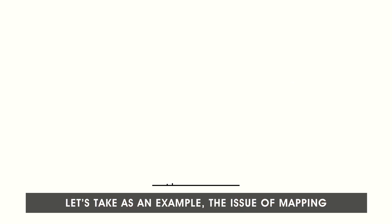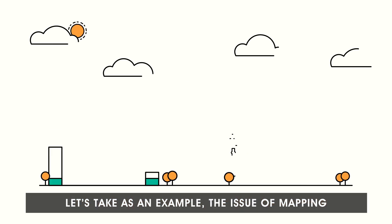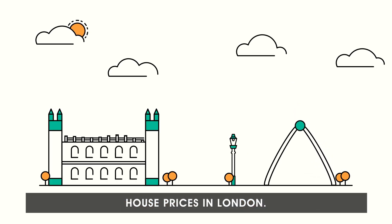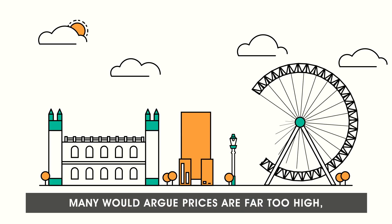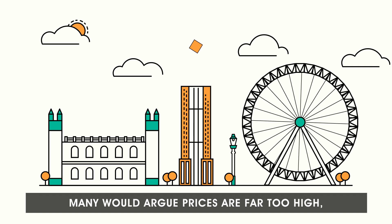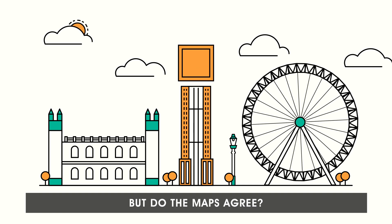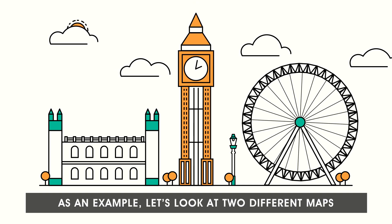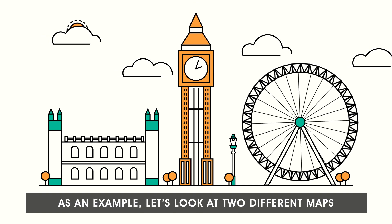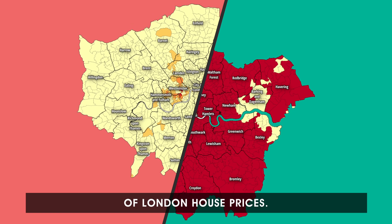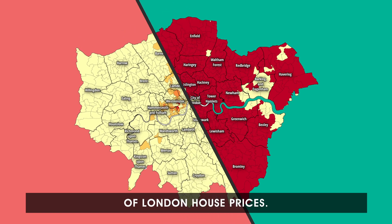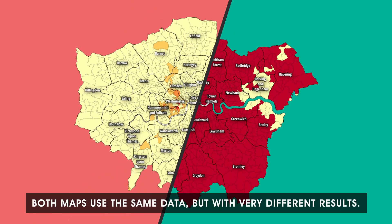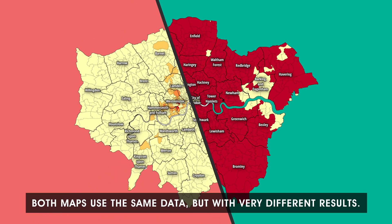Let's take as an example the issue of mapping house prices in London. Many would argue prices are far too high, but do the maps agree? Let's look at two different maps of London house prices. Both maps use the same data but with very different results.